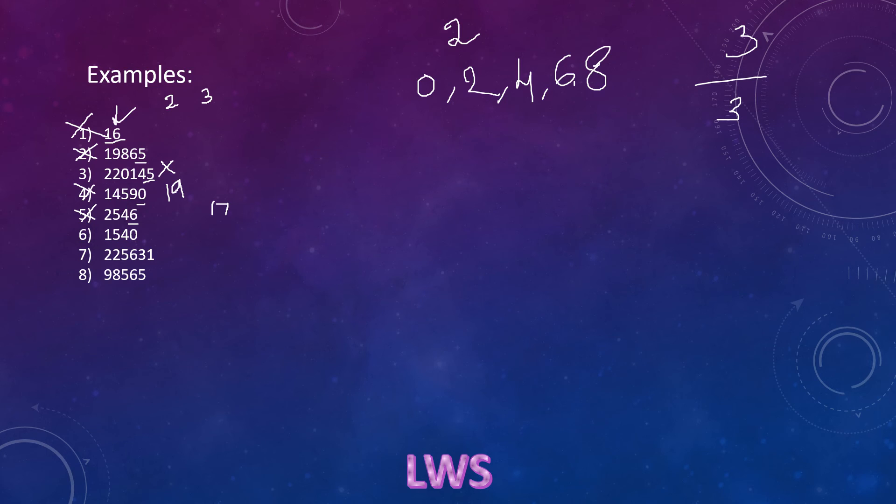Again, 0 is in units place, so this is exactly divisible by 2. 1 plus 5 is 6, plus 4 is 10. 10 is not exactly divisible by 3, so 1540 is not exactly divisible by 6.